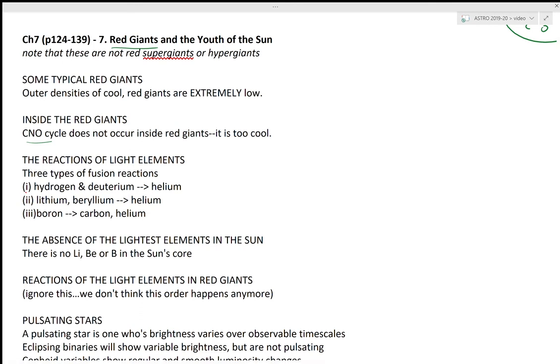Inside red giants, we aren't looking at any hydrogen to helium fusion. We are really looking at a triple alpha process. Red giants, especially the kind our Sun will become, are fusing helium into bigger elements.